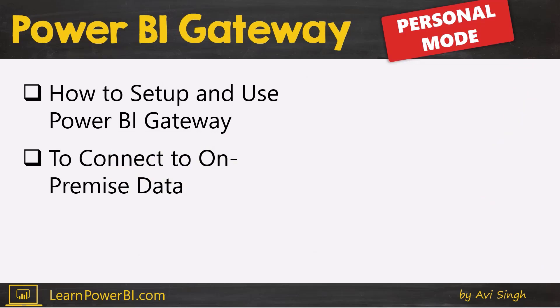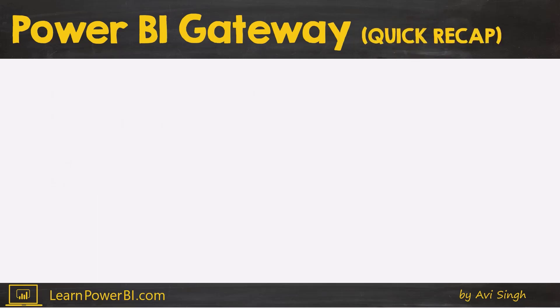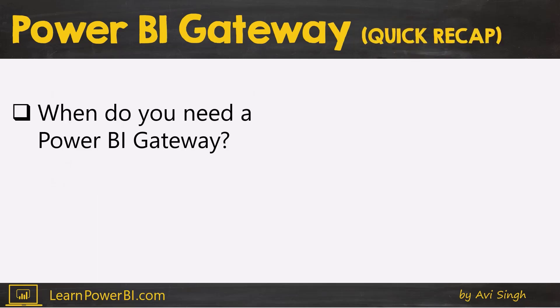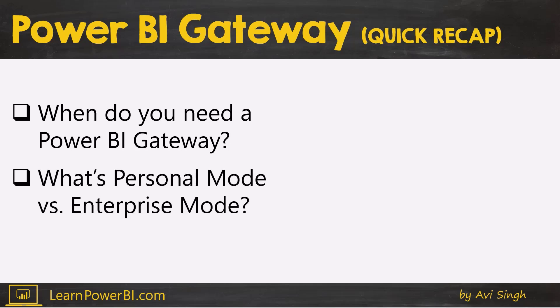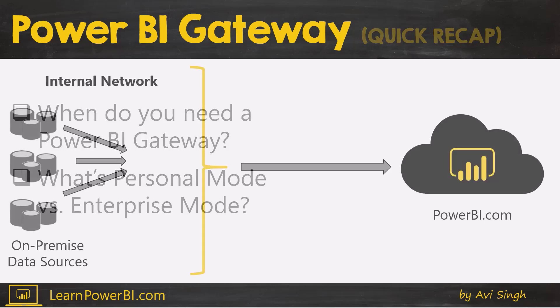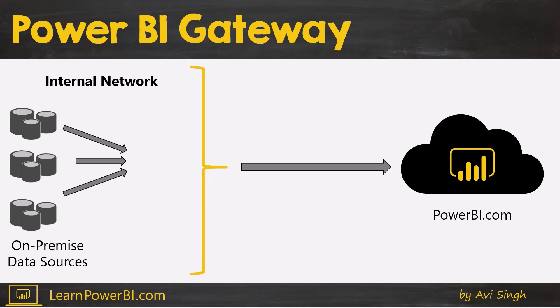Let's go through the steps: how to set up, how to use it, and how to connect to your on-premise data. But before that, a quick recap of when you need the gateway. That's really simple — when you publish your models to powerbi.com, you need something to give the cloud the ability to connect to your on-premise data sources when you're trying to refresh the model in the cloud.